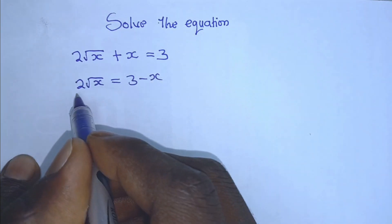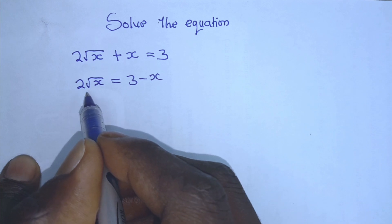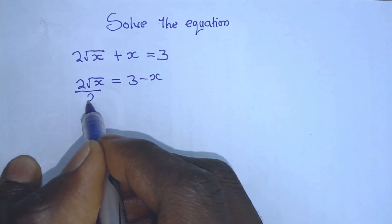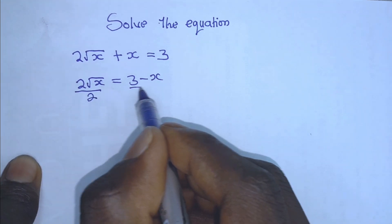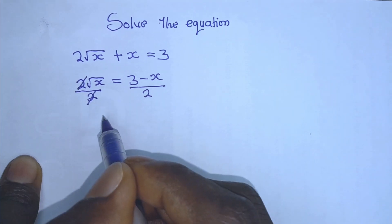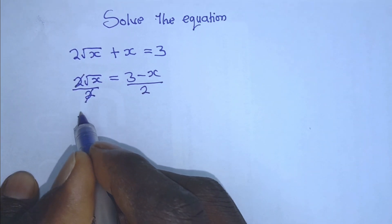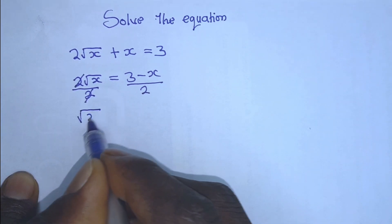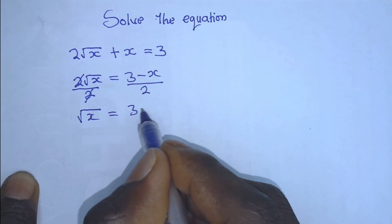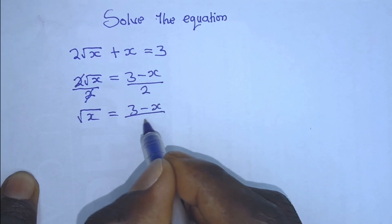And then, divide both sides by 2 from the equation. These 2 get cancelled with these 2, and we are left with square root of x is equal to 3 minus x over 2.